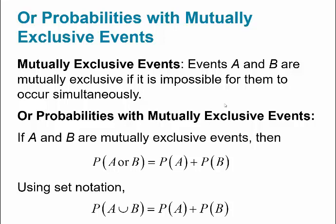Now let's talk about OR statements with probabilities — specifically mutually exclusive events. Events A and B are mutually exclusive if it's impossible for them to occur at the same time. For example, drawing a queen and drawing a king from one card are mutually exclusive because you can't get both in one draw. When A and B are mutually exclusive, the probability of A or B equals the probability of A plus the probability of B.